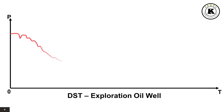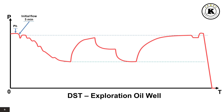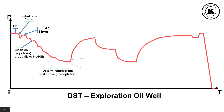On this pressure graph from downhole gauge recorders, we can identify the following well testing sequences. Taking note of hydrostatic pressure PH. Opened the well for an initial flow of 5 minutes to establish communication from reservoir to casing. Closed the well for an initial shut-in period for 1 hour to estimate initial reservoir pressure PI. Opened the well for a clean-up period on adjustable choke, gradually increased to 64 over 64th. Determination of the best choke size for optimum flow without depletion.